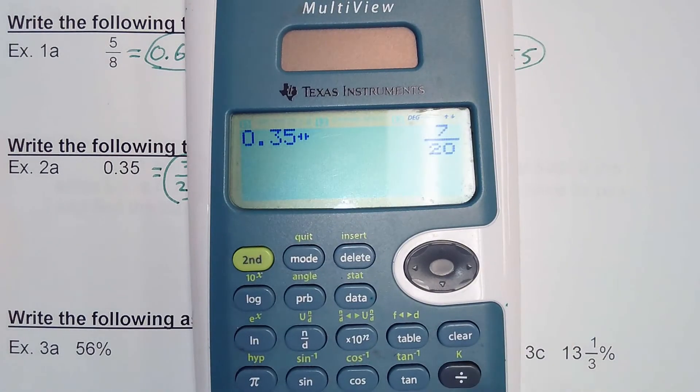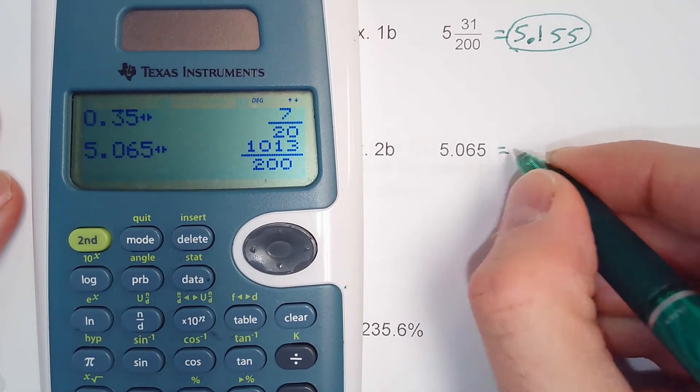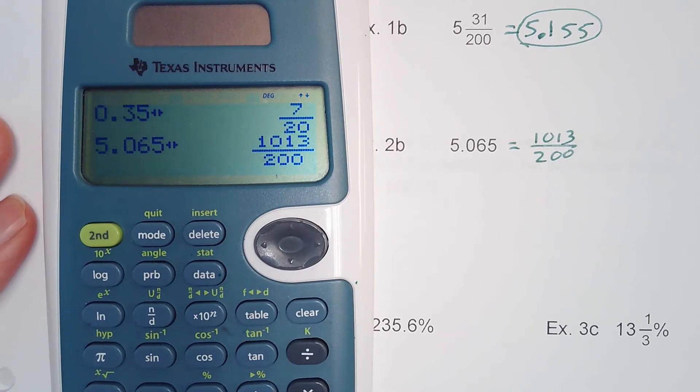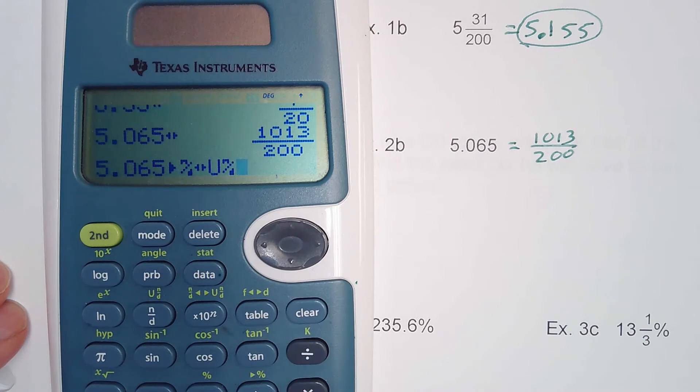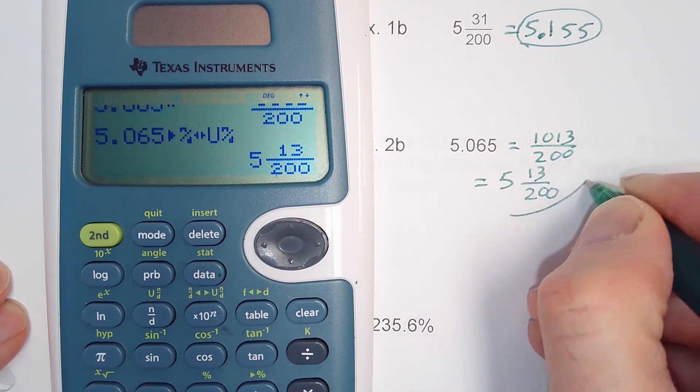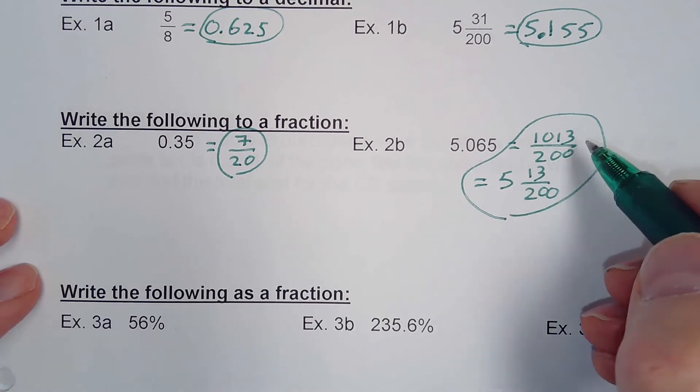Let's do 5.065. Hit the double arrow key, enter. Now it's going to give me an improper fraction. If they ask you to write it as a mixed number, look at your fraction key on your calculator. To the right, you have your times 10 to the n key, and above it, that's going to allow you to convert an improper fraction to a mixed number. So we hit the second key, that times 10 to the n key, and then hit enter. So that'd be 5 and 13 over 200. For that, you're just going to have to look at MyLabsPlus.